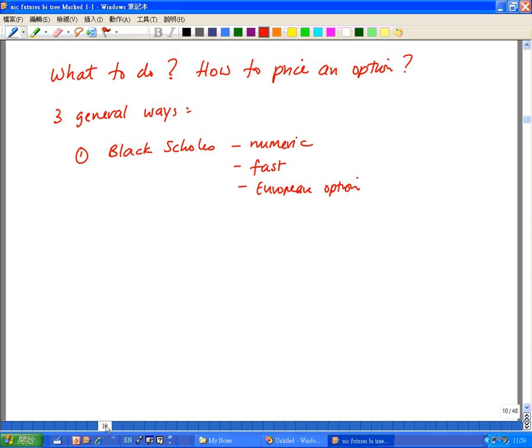The first is called the Black-Scholes formula. This is a pure numerical approach—a formula that takes into account the probability of stock price movement. From there, the value of the option is determined. The good thing about the Black-Scholes approach is that it's pretty fast. It's one formula—we plug the numbers in and we get the option value.